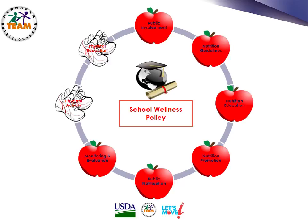The USDA Food and Nutrition Services regulations were finalized on July 29, 2016, which creates a framework and guidelines for written wellness policies established by local education agencies, or LEAs. The final rule requires LEAs to begin developing a revised local school wellness policy during school year 2016-2017. LEAs must fully comply with requirements by June 30, 2017. New regulations require districts to include the following elements.